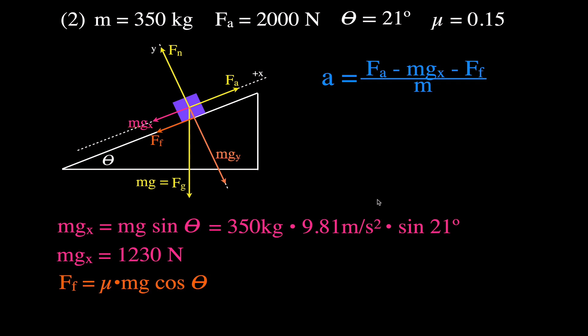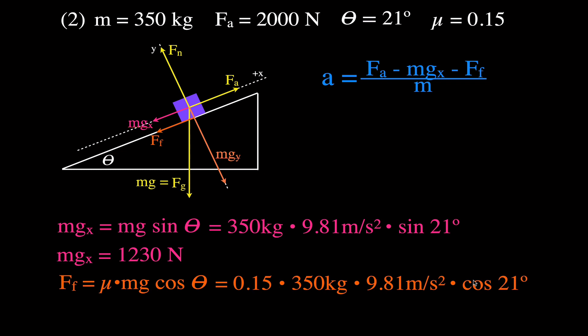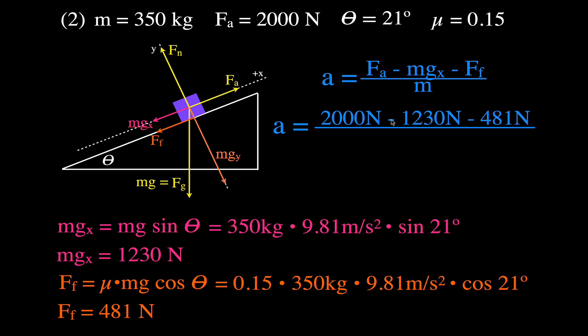The x component of gravity is again 1,230 newtons. For the friction force, we calculate: 0.15 times 350 times 9.81 times the cosine of 21 degrees, giving us a friction force of 481 newtons. Our acceleration equation is then: 2,000 minus 1,230 minus 481, divided by 350 kilograms. With a coefficient of friction of 0.15, the acceleration is 0.83 meters per second squared — less than before due to friction.